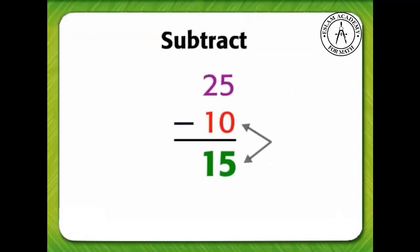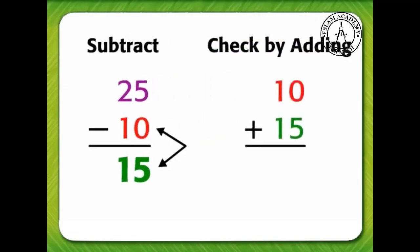Add the numbers 15 and 10 to check the answer. 5 plus 0 equals 5. 1 plus 1 equals 2. The answer is 25. Since 25 is the number you subtracted from, your answer is correct.